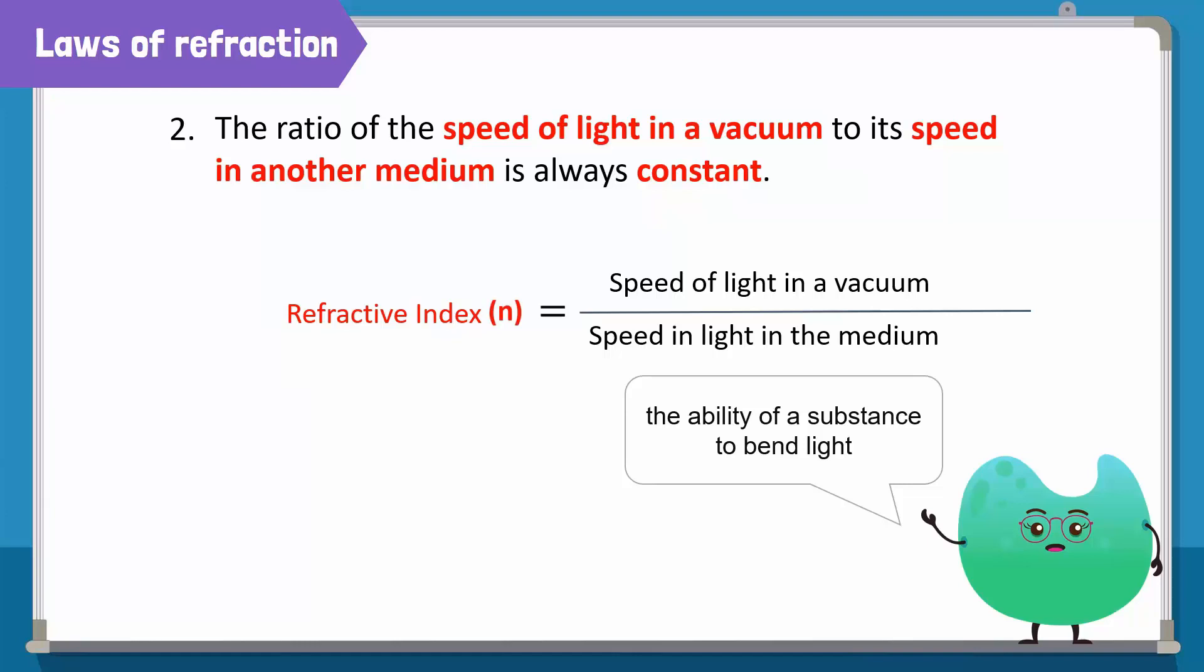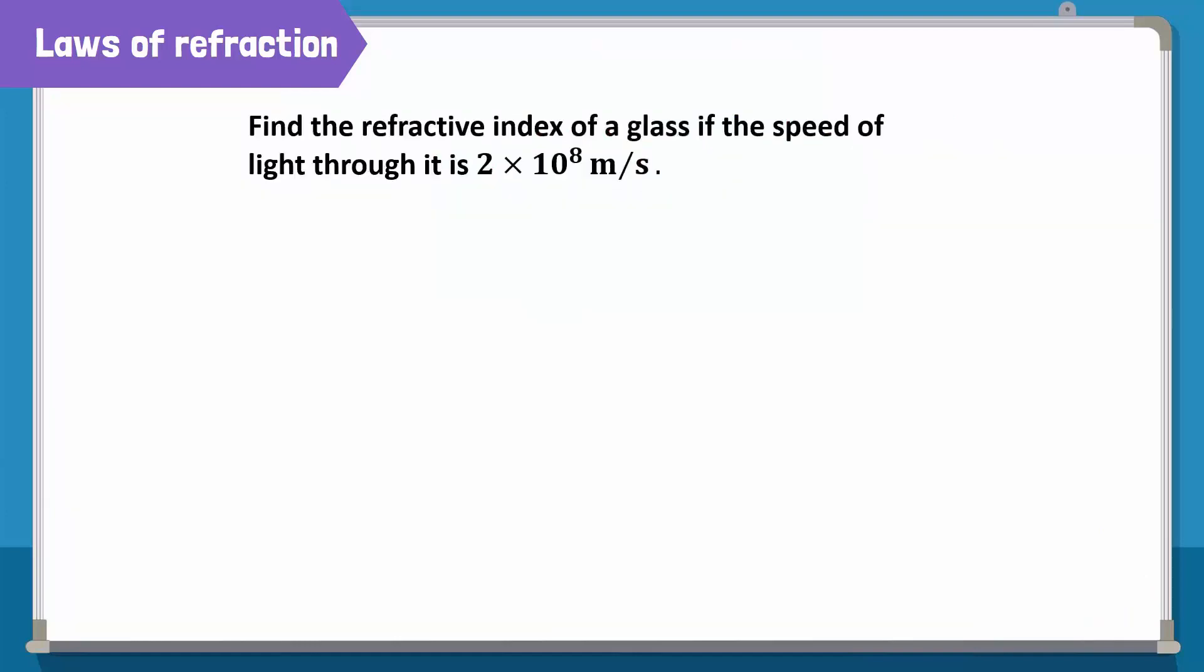Now, let's find the refractive index of a glass where the speed of light through it is 2 into 10 raised to the power 8 meters per second. First, write the formula of the refractive index as the ratio of the speed of light in a vacuum to the speed of light in a glass.